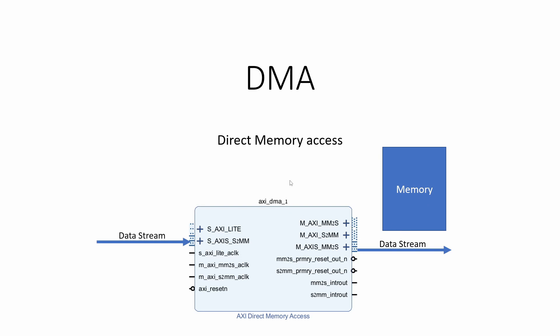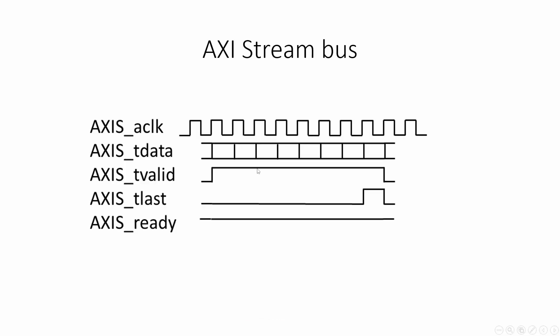To transfer data, Xilinx uses the AXI Stream Bus. This is a very simple bus which moves data cycle by cycle and it only has a few control signals.